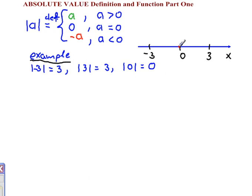So between 0 and negative 3, the distance measured will be 3 units. So this is how you see absolute value.